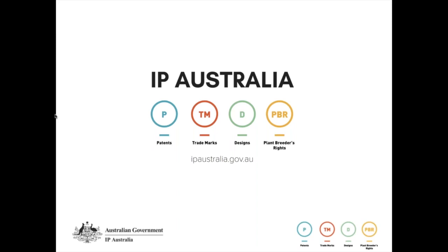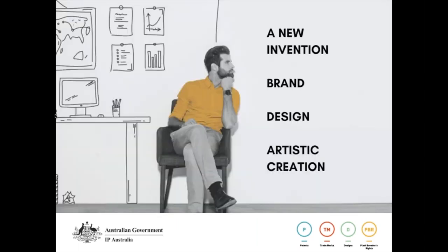When we talk about intellectual property, we talk about it in various forms — patents, trademarks, designs, and plant breeders rights. At its heart, IP is the application of the mind to create something new and original, and it can take many different forms. For example, a new invention, brand, design, and artistic creation — but also other forms you might not normally think about, like the contact list on your phone, which could be of great value to a company. You are surrounded by various forms of intellectual property all the time.